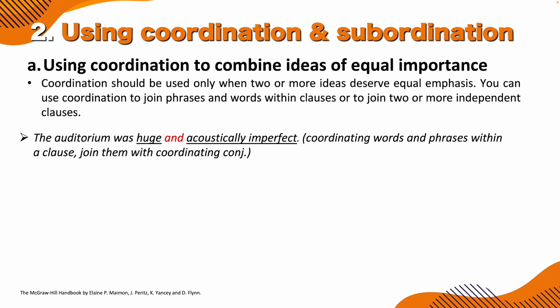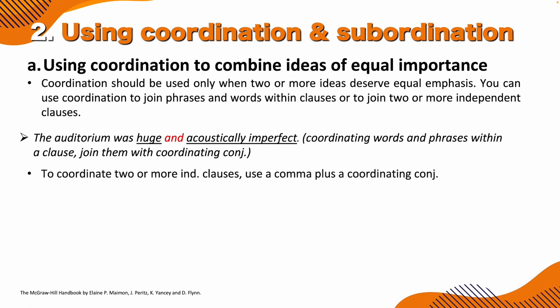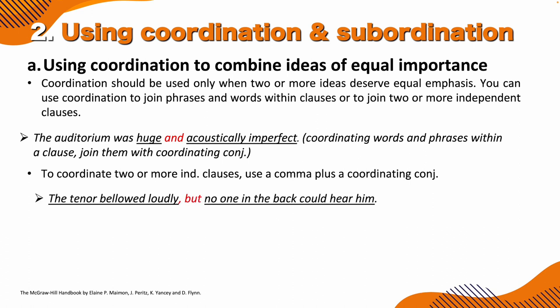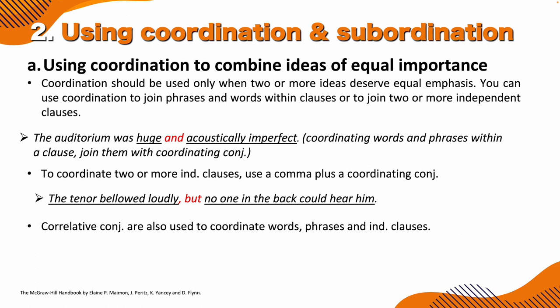So we are coordinating words and phrases — 'huge' and 'acoustically imperfect' — within an independent clause. To coordinate two or more independent clauses, use a comma plus a coordinating conjunction. Like: 'The tenor bellowed loudly, but no one in the back could hear him.' We have two independent clauses joined by BUT with a comma. Correlative conjunctions are also used to coordinate words, phrases, and independent clauses.